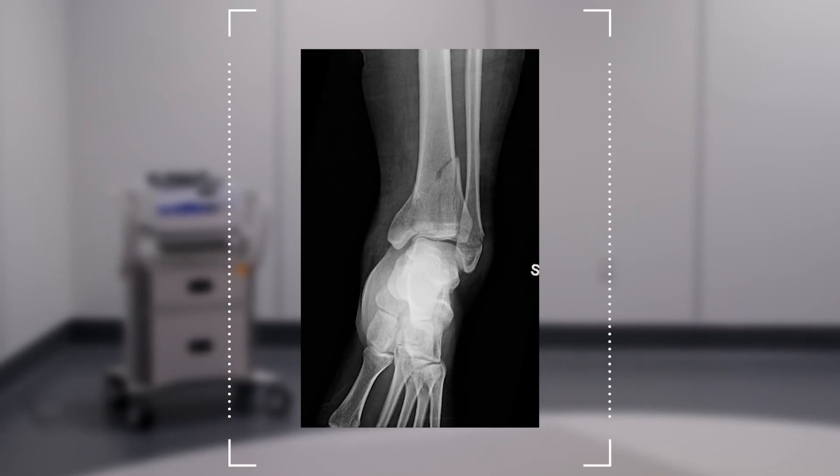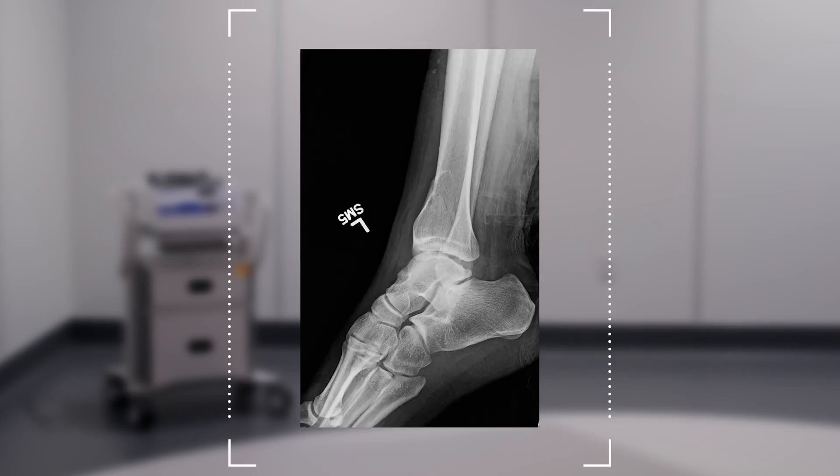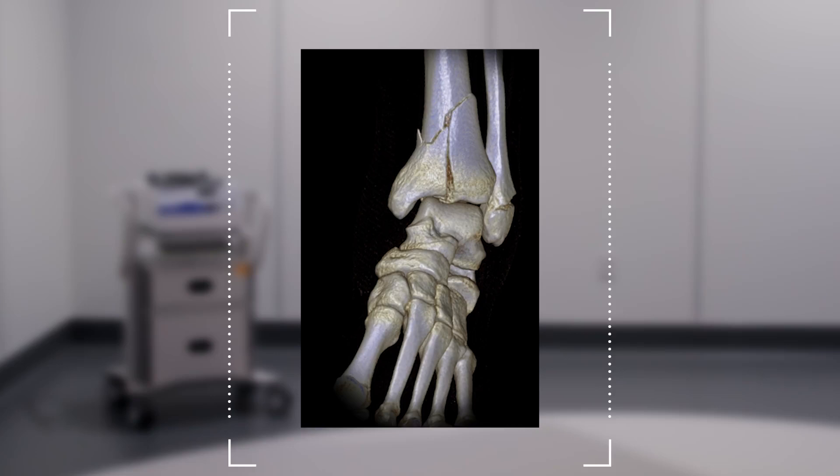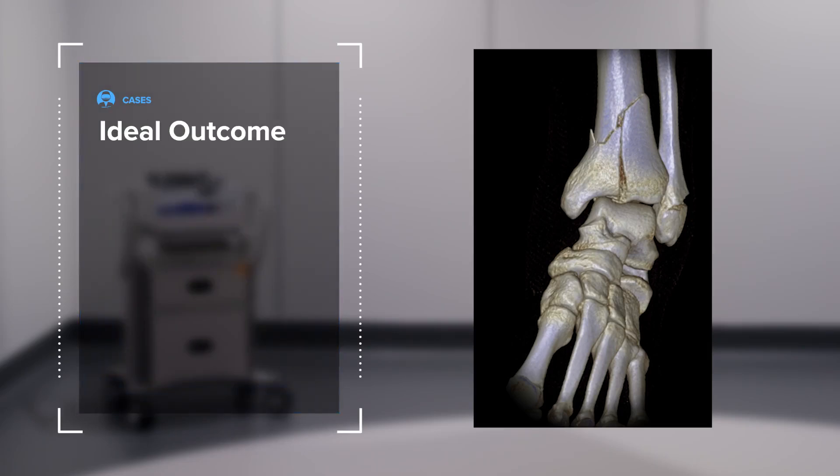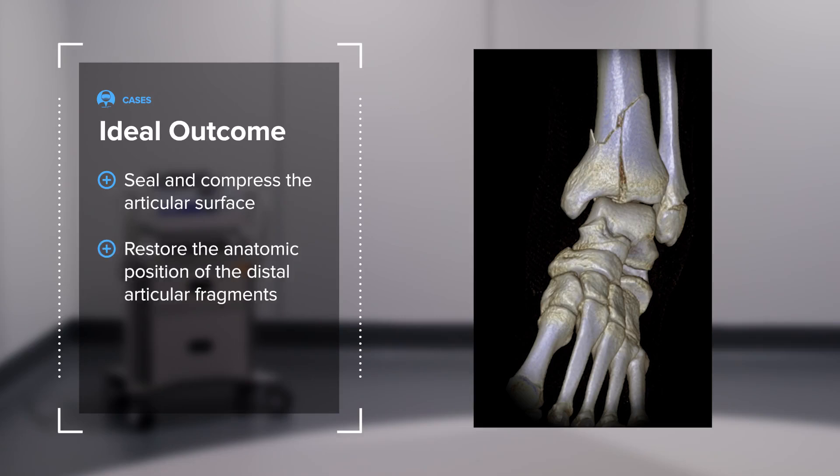This patient is a 42-year-old male who sustained a distal impaction injury to the tibia, as demonstrated on these plane films, and made even more apparent on this surface-rendered CT scan, which demonstrates the sort of explosion of the distal articular surface. Based upon the teachings of Rudy and Algauer and all subsequent learning since then, we understand that these injuries have a guarded prognosis. But to achieve the best outcomes, we need to seal and compress the articular surface and restore the anatomic position of the distal articular fragments.